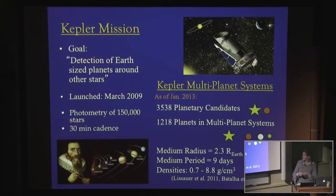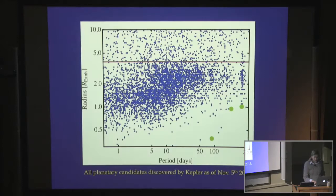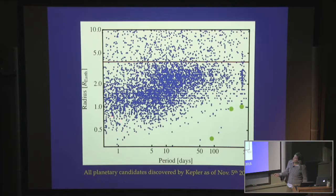Their typical radii are somewhat bigger than the terrestrial planets — the median radius is about two Earth radii. What I've shown here is the period in days of all the candidates in the Kepler catalog as a function of their radius as a fraction of the Earth radius. All the blue points are the data, and for comparison I plotted Mercury, Venus, and Earth.